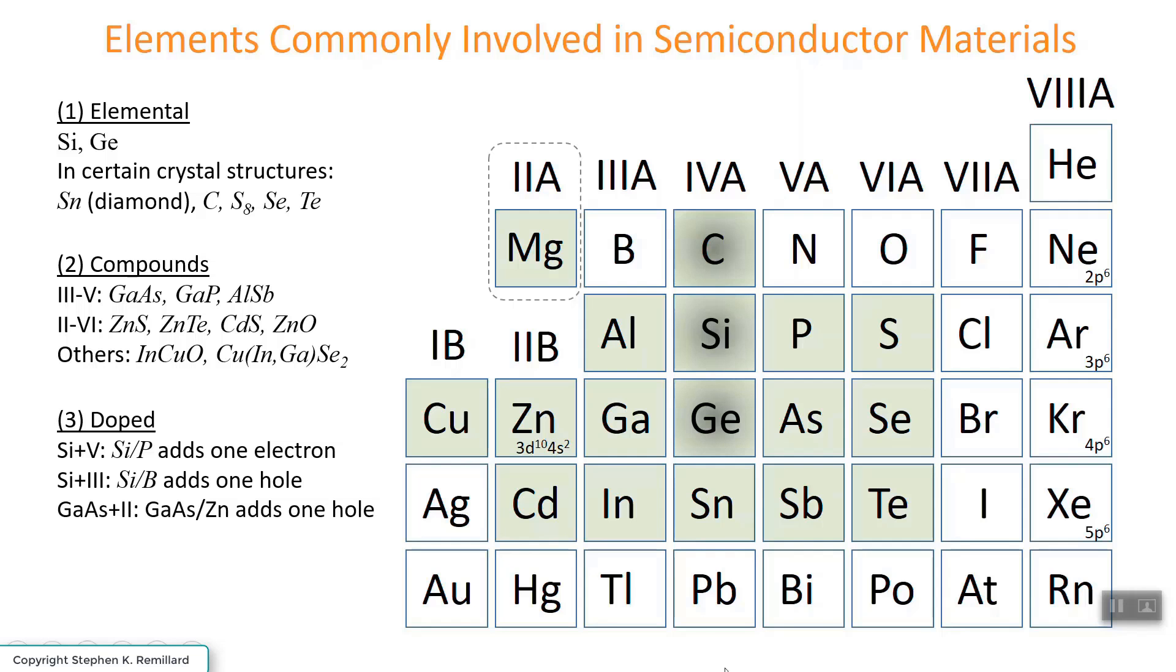The compound semiconductors can be doped as well. Gallium arsenide, the most commonly used compound semiconductor, can be doped, for example, with zinc from group 2. And that's going to add a hole, because zinc has fewer electrons than either gallium or arsenic.